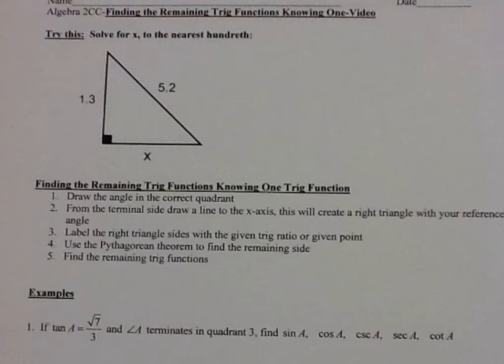So let's take a look at the Try This. It says solve for x. I do have a right triangle here. One side of the right triangle is 1.3, the hypotenuse is 5.2, and I'm looking for the third side of the right triangle. So we would use the Pythagorean Theorem.